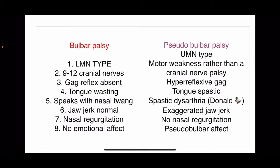Now the differences between bulbar and pseudobulbar palsy. Bulbar palsy is a lower motor neuron type involving cranial nerves 9 to 12. The gag reflex will be absent and there will be wasting of the tongue. Patients speak with a nasal twang because the pharyngeal and laryngeal muscles are weak. The jaw jerk is normal, as the fifth nerve is not involved. There is nasal regurgitation, but no emotional lability.